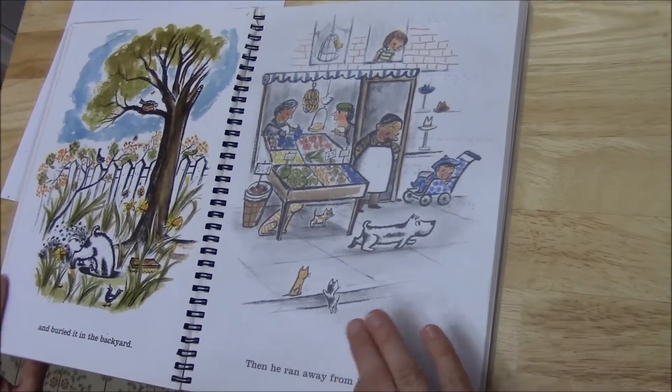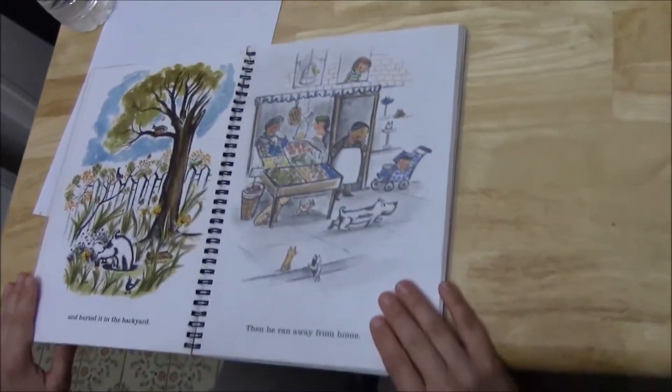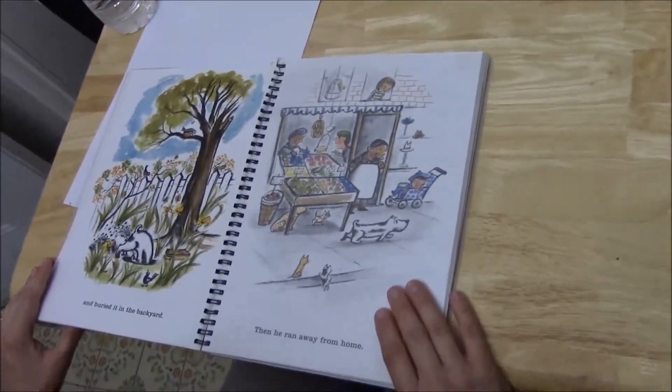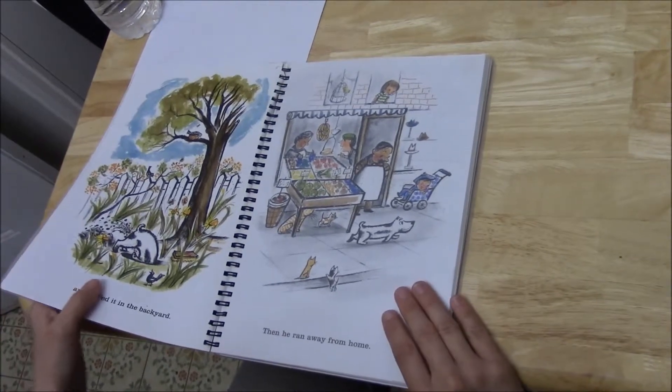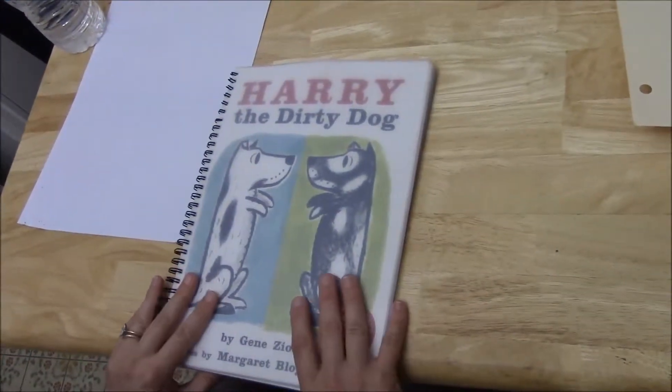You can also borrow books like this at the Library for the Blind. Each state has their own Library for the Blind. The Library for the Blind also has board books as well as just plain Braille books.